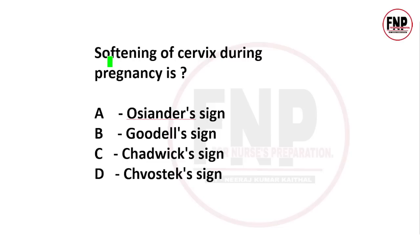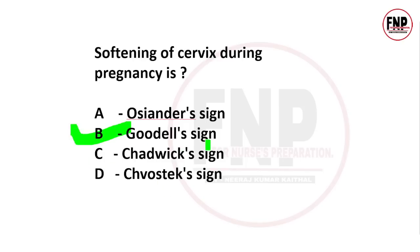Next question: Softening of cervix during pregnancy is known as which sign? Options: Osiander, Goodell, Chadwick, or caustic. The right answer is option B, Goodell's sign. Pregnancy ke dauran cervix ka hamare lips ki tarah soft ho jaana Goodell's sign hai.